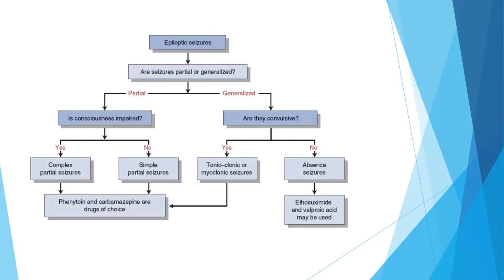For epileptic seizures, we first determine if seizures are partial or generalized. If partial with impaired consciousness, it is complex partial seizures; without impaired consciousness, it is simple partial seizures. For both types, phenytoin and carbamazepine are the drugs of choice. If seizures are generalized and convulsive, we diagnose tonic-clonic or myoclonic seizures and again use phenytoin and carbamazepine. If they are absence seizures only, we use ethosuximide and valproic acid, as in this patient.